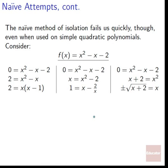The naive method of isolation will fail us quite quickly, even on simple quadratic polynomials. Consider f(x) = x² - x - 2. Setting 0 = x² - x - 2, we might try to get numbers on one side: 2 = x² - x. Then we try to pull out an x: 2 = x(x - 1). We're not really sure what to do next.